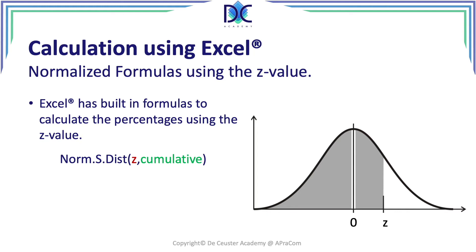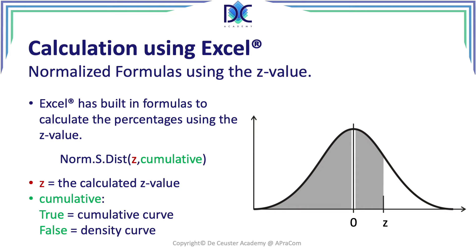In Excel, we always calculate to the left of Z — either the value at Z or the probability for values less than Z. The Z value is calculated with the formula: X minus the average divided by the standard deviation. Cumulative means we either select the cumulative curve, shown as the gray area, or false — when we select false, we get the density or mass curve, which is the value of the normal distribution function at point Z.